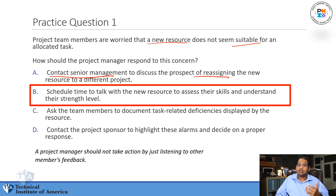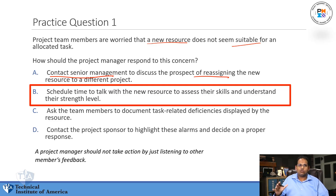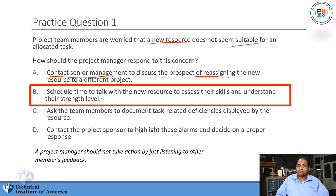Not to mention, contacting senior management right off the bat — senior management is always your last resort and is probably a choice you should never select. Anytime you see a choice involving senior management, like contacting them or asking them for help, that's probably not the answer — throw it out. Choice C says ask the team members to document task-related deficiencies, but you're taking action against the resource without even finding out information about them.